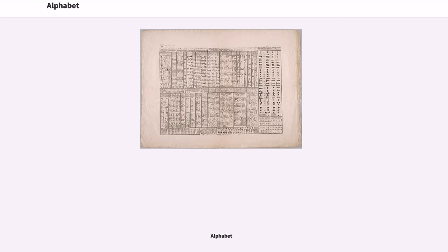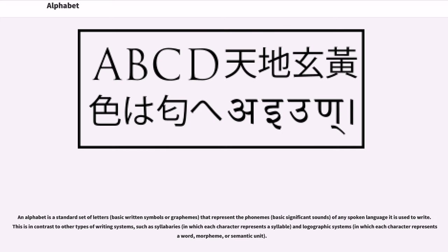Alphabet. An alphabet is a standard set of letters, basic written symbols or graphemes, that represent the phonemes, basic significant sounds, of any spoken language it is used to write. This is in contrast to other types of writing systems, such as syllabaries, in which each character represents a syllable, and logographic systems, in which each character represents a word, morpheme, or semantic unit.